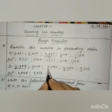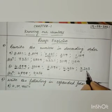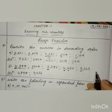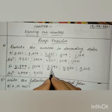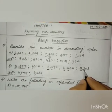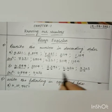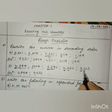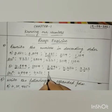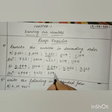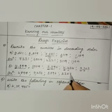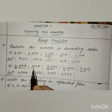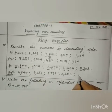Next we have 3,396 and 3,203. In the thousands place they are the same, so we compare the hundreds place. Here in this number we have 3 in the hundreds place and here we have 2. Since 3 is greater than 2, 3,396 is greater than 3,203. So the next number is 3,396, then 3,203. The last number is 1,009. This is the descending order of the given numbers.